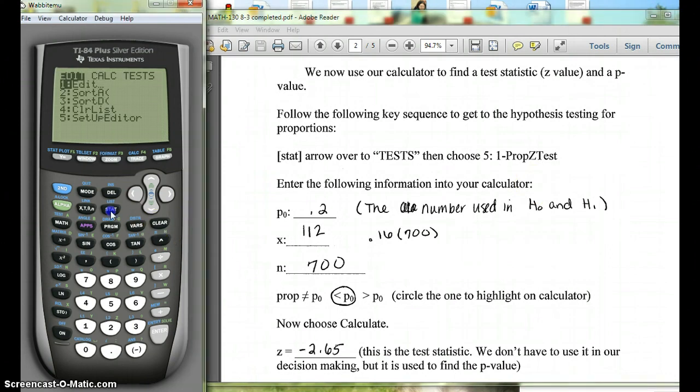To do this, you're going to hit stat, arrow over to tests, and we're going to choose one prop z-test. You can see that's number 5. So you can either just hit 5 or choose 5.